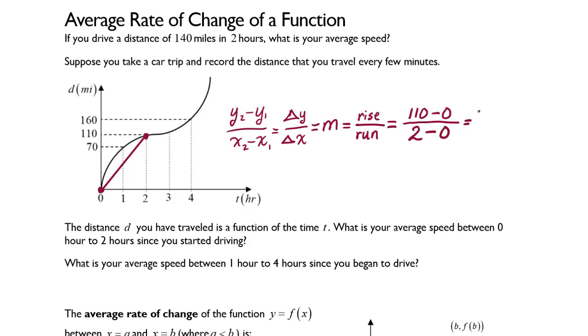If I reduce this, I get, or simplify this, I get 110 over 2 which simplifies to 55. Now remember our vertical distance is miles, our horizontal distance is hours, so this is 55 miles per hour.